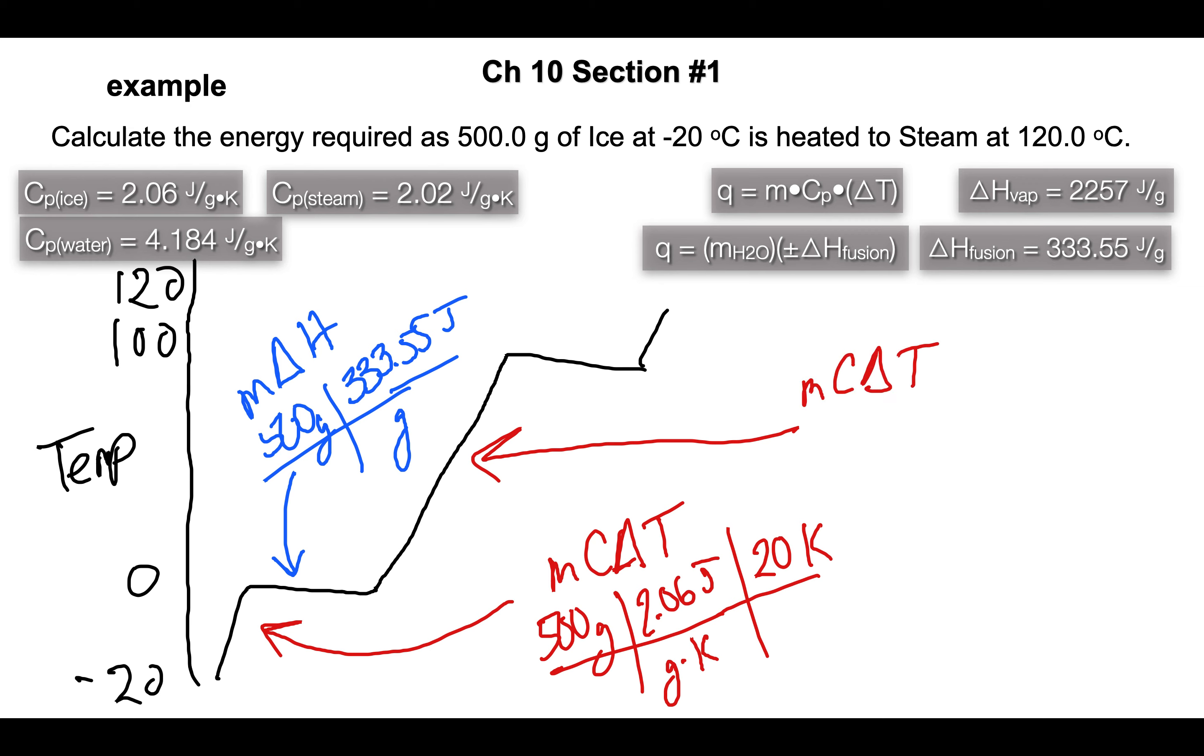Because we're doing temperature change, the mass is still 500 grams, Cp of water is 4.184 joules per gram per Kelvin, and the temperature change is 100 K. Running out of room but now that we heated up the liquid water to 100, we then have to vaporize the water.